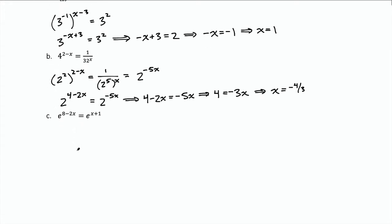For part c, most of the work is already done for us because we have here a base of e on both sides. So I can jump straight to setting those exponents equal to each other. Eight minus two x equals x plus one. If I add two x to both sides, I get eight equals three x plus one. Subtract one from both sides, we get seven equals three x. And then divide by three to get x equals seven thirds.